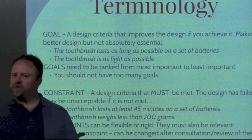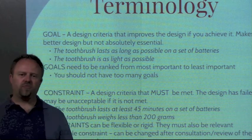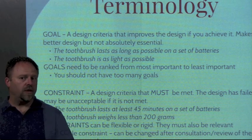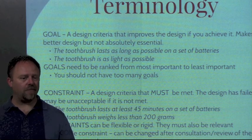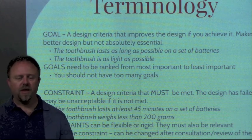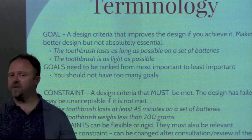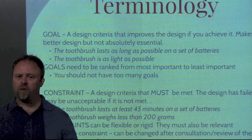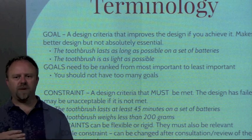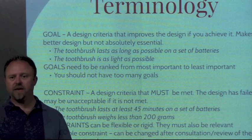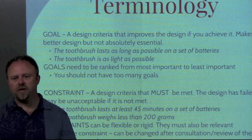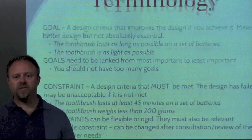For example, using toothbrushes: maybe the toothbrush lasts as long as possible on a set of batteries is an example of a goal. We have a metric there as a time requirement, and the target value has no upper limit — we're trying to make it as big as possible. Or the toothbrush is as light as possible is another example — the metric is weight, and the target value is as small as possible. These might conflict, so we rank their level of importance.